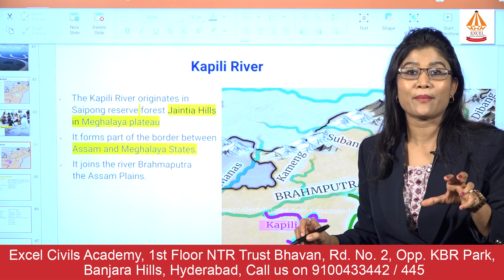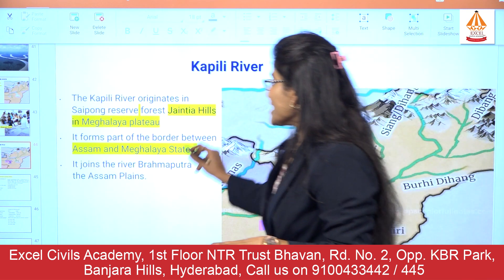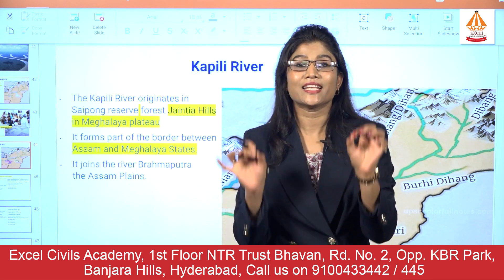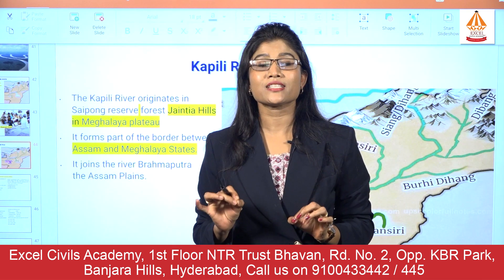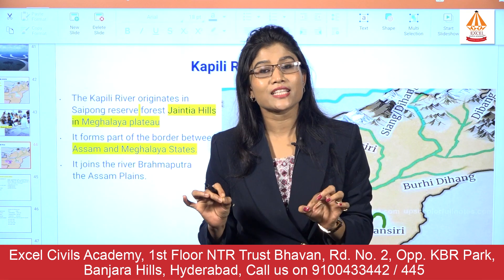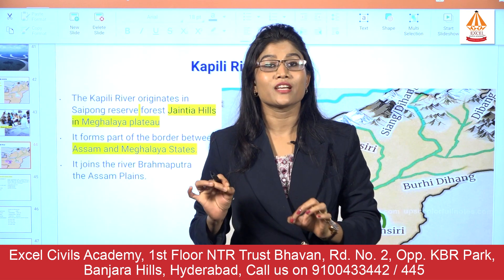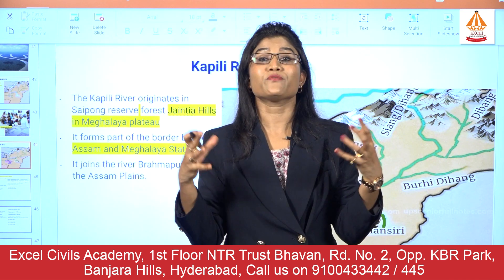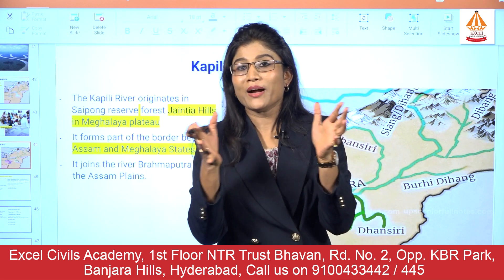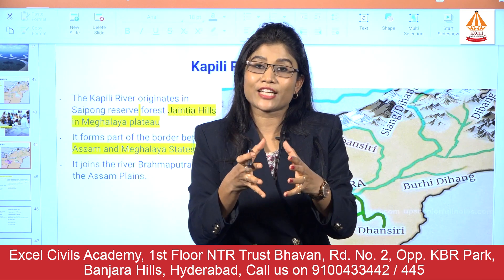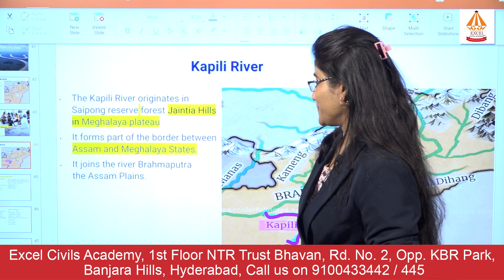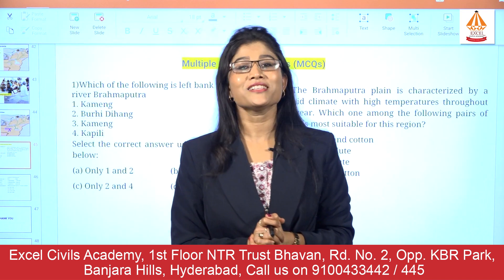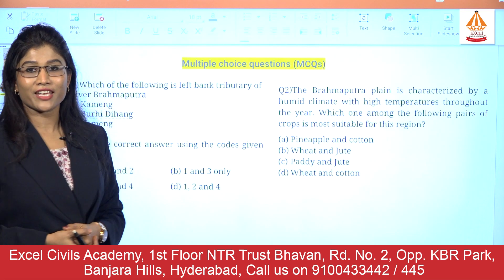You can see the Kapili river flowing from the Meghalaya Plateau and confluencing with the Brahmaputra in the Assam plain. To revise: there are three left bank tributaries — Buri Dihang, Dhaneseri, and Kapili. All three originate from different hill ranges in different states, but they all confluence with the Brahmaputra in the state of Assam as its left bank tributaries.